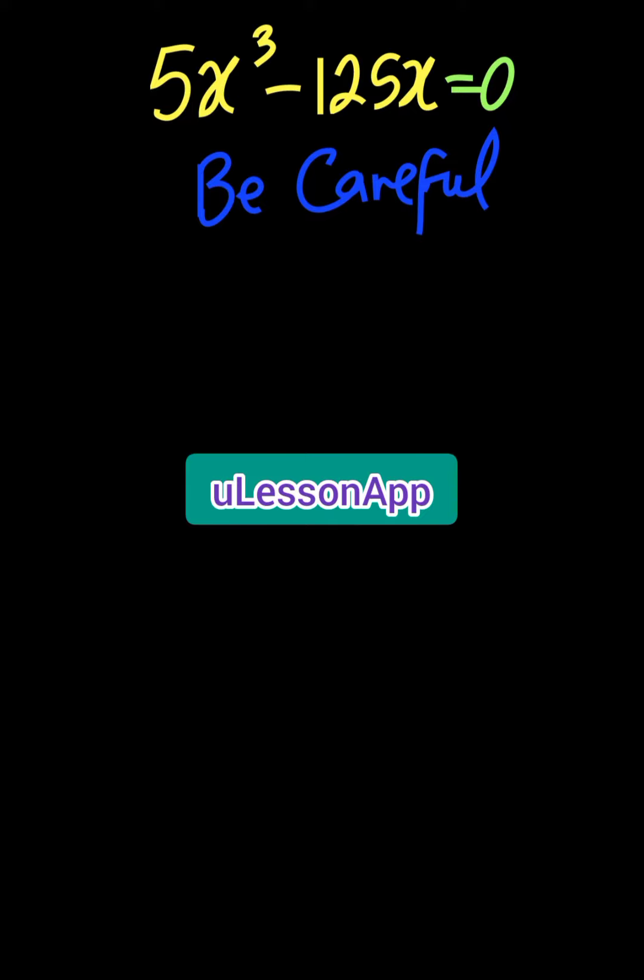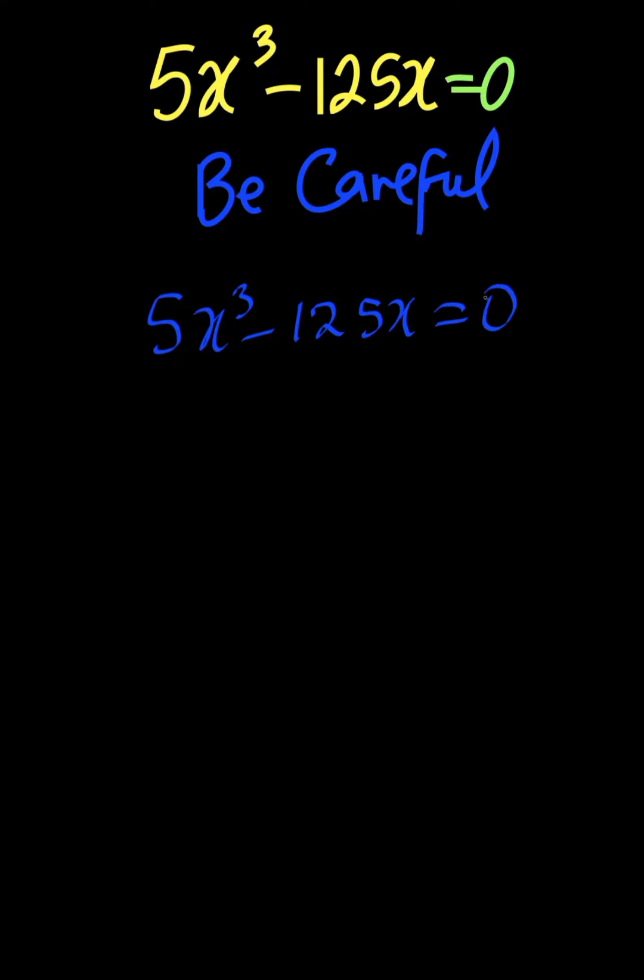So we have 5x³ minus 125x equals 0. Then 5x is a common factor. Here, you bring out the 5x. 5x³ divided by 5x is just x² minus 125x divided by 5x will give us 25.